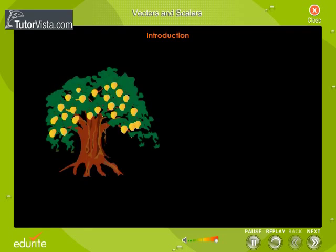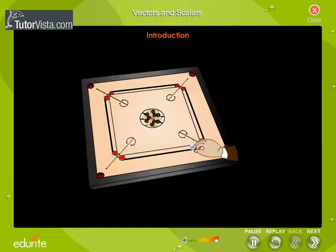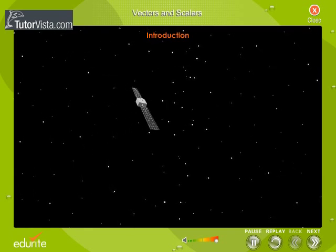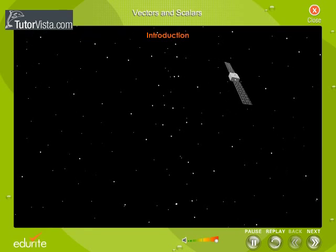Consider a freely falling body under the action of gravity. Here the motion of the body is one-dimensional and hence the distance traveled in a given time is a scalar. The motion of coins on a carom board is two-dimensional. Similarly, when a spacecraft moves in space, the motion will be three-dimensional.